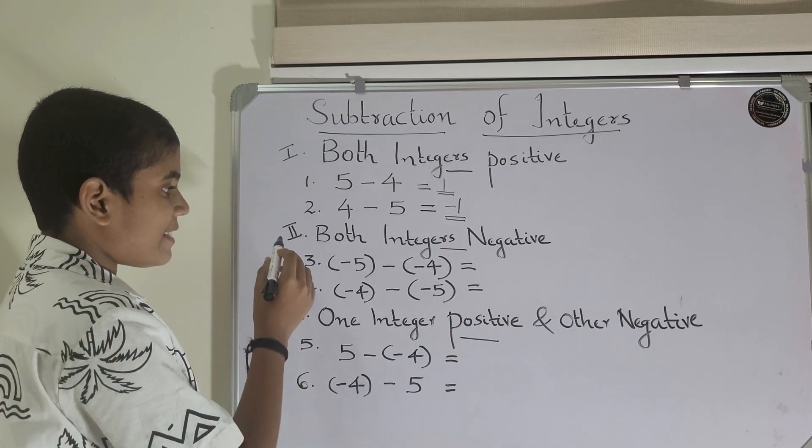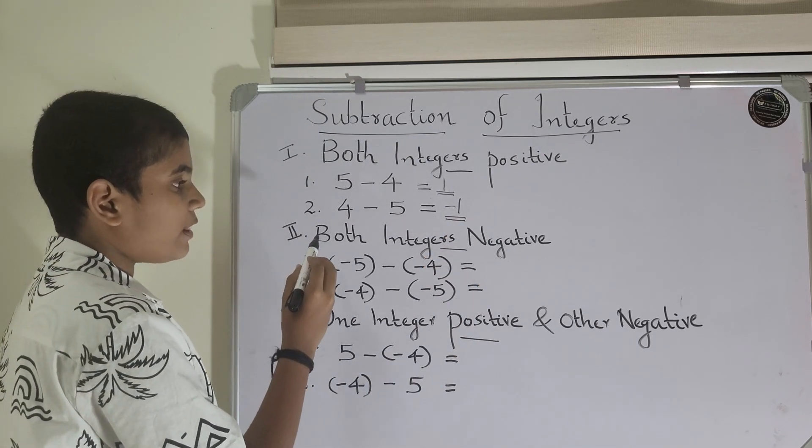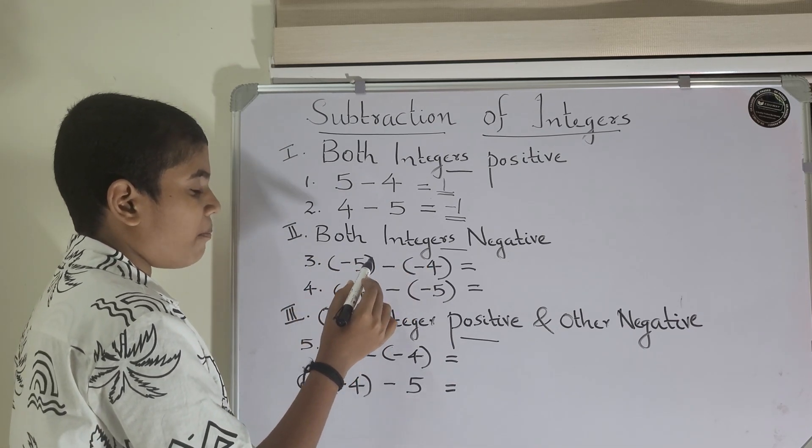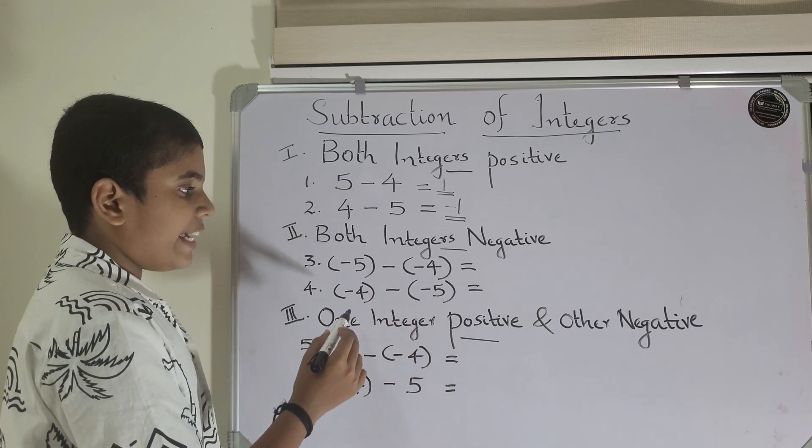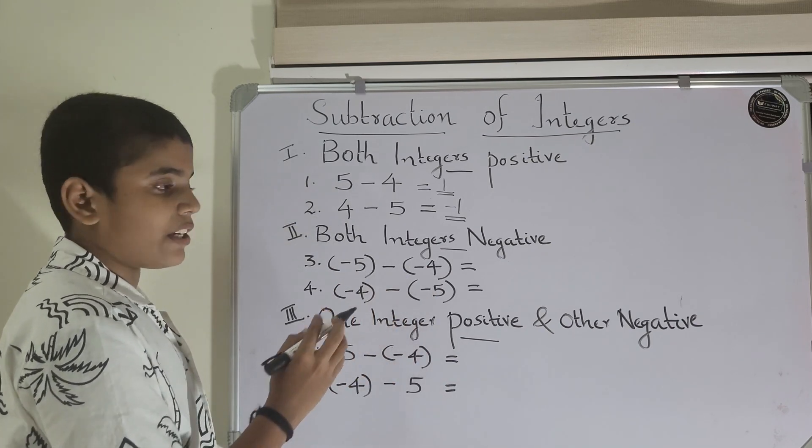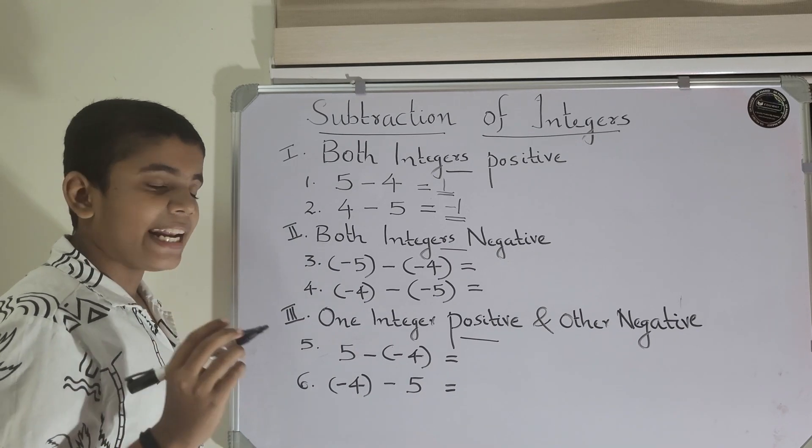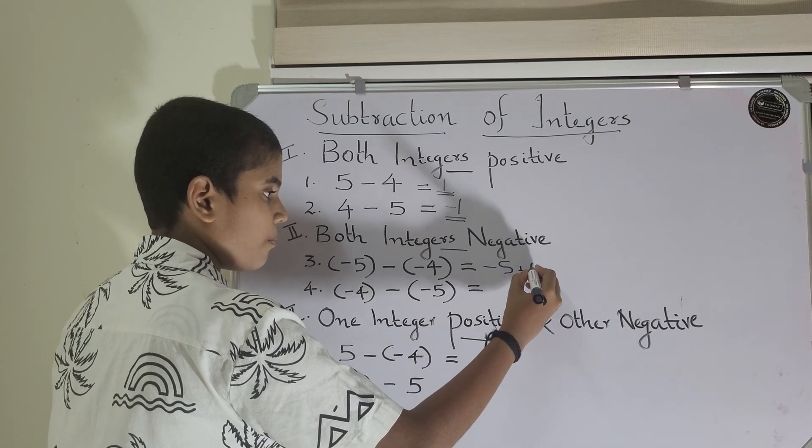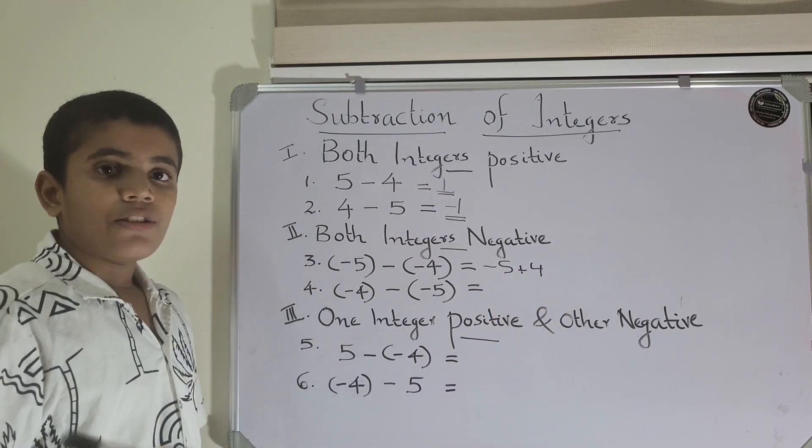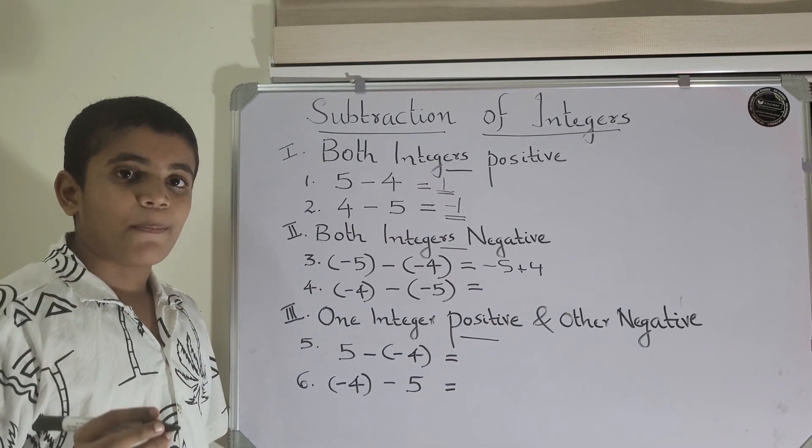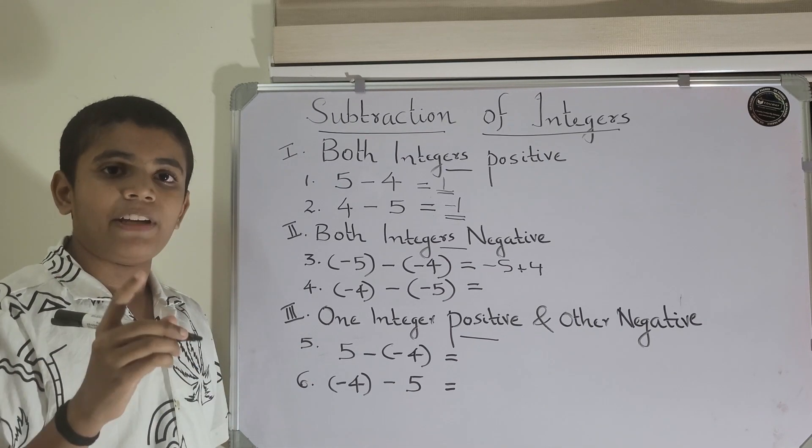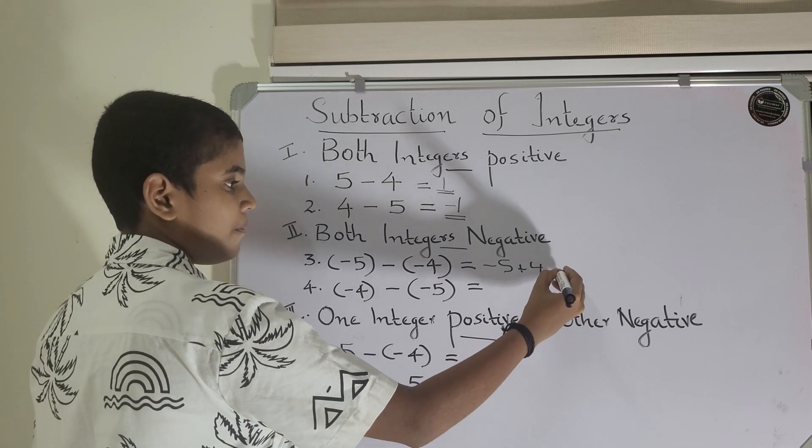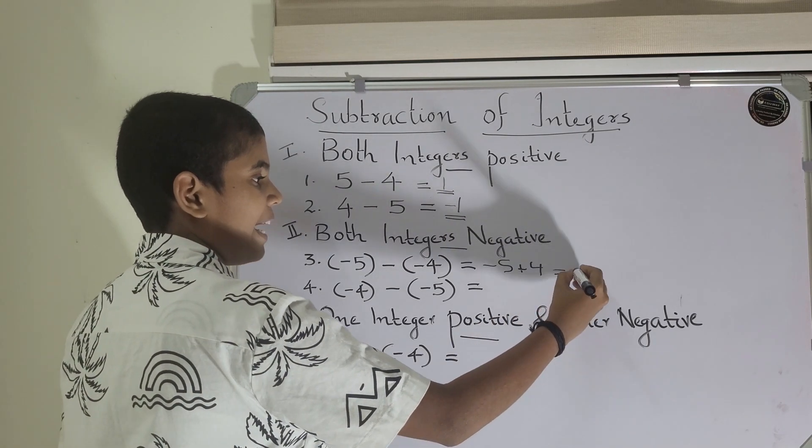Next, in the second case, both integers are negative. Let's see: minus 5 minus minus 4. Here, minus times minus equals plus. So, I can rewrite it as minus 5 plus 4. To solve this problem, we need to subtract the smaller number from the bigger number and put the sign of the bigger number. So, it will be minus 1.